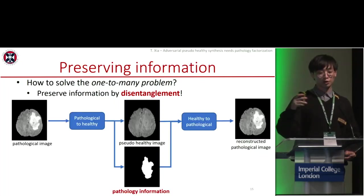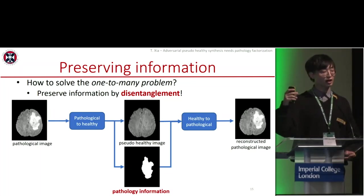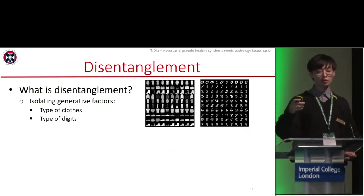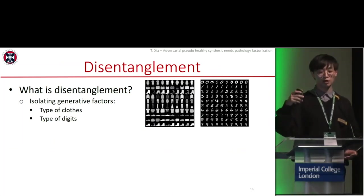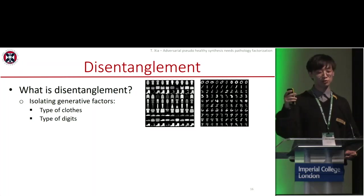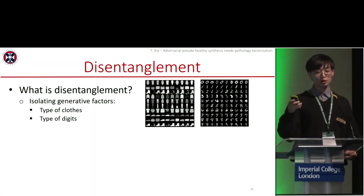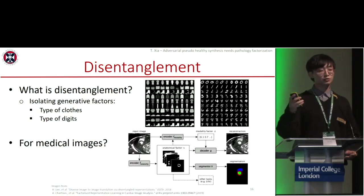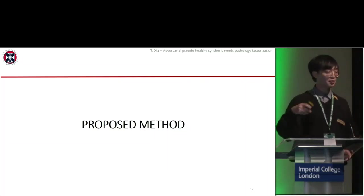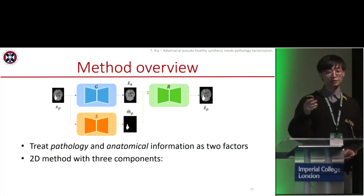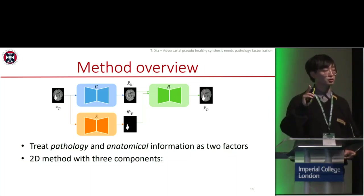In our method, we solve this problem by preserving information of the pathology with disentanglement. As we can see in example figures, we disentangle the information of types of clothes or type of digits from other attributes such as size, rotation, or brightness. For medical images, a related work from my colleague disentangles modality information and anatomical information. Our proposed method takes a similar idea, where we treat pathology and anatomical information as two factors with three components.